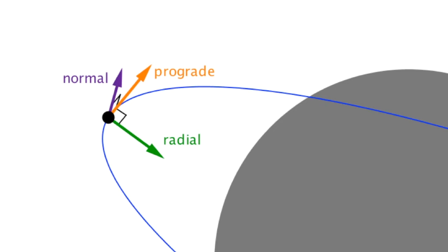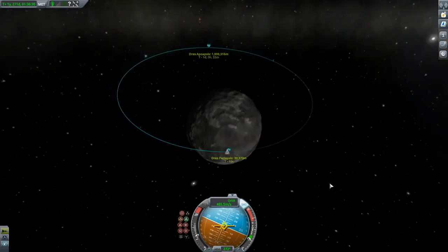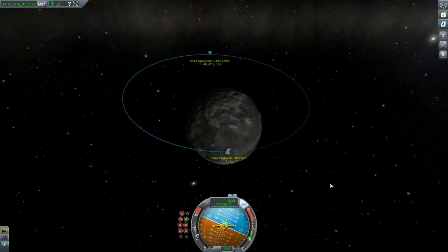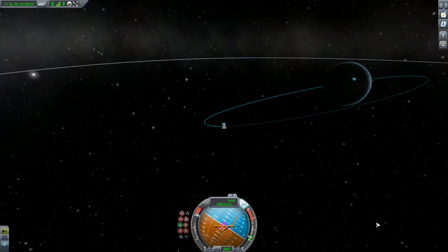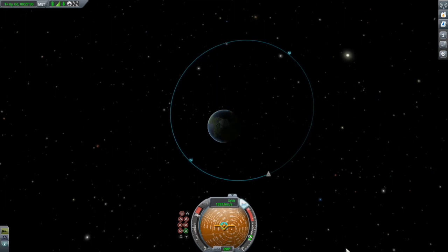Normal and radial burns have a fundamentally different function than prograde and retrograde burns. The primary purpose of a prograde or retrograde burn is to change the amount of energy in the orbit, which in turn changes altitude. Normal and radial burns are about changing the direction of your path through space. Specifically, with a normal burn you are interested in changing the plane of your trajectory, that is, your inclination. While radial burns twist your orbit, changing the positions of the periapsis and apoapsis.